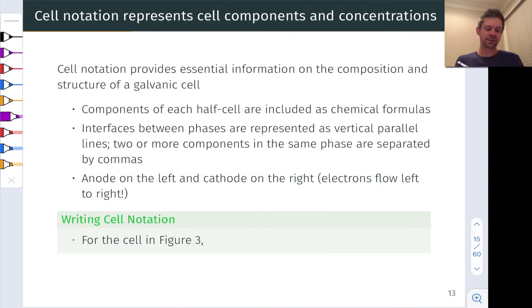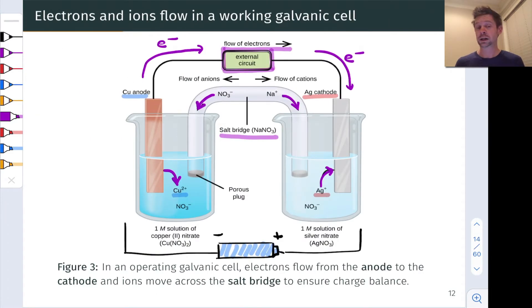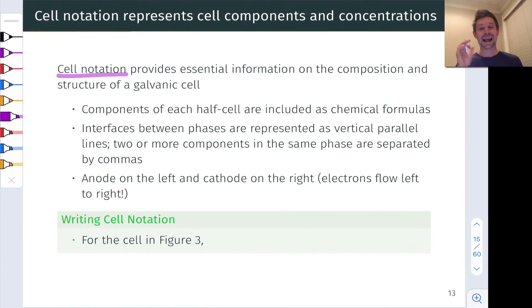Cell notation is a set of standard conventions for writing the components of a galvanic cell and the concentrations of any aqueous species. From this textual description, we can reconstruct a picture and we can get useful thermodynamic information about the cell, including the voltage we would expect it to deliver, something we'll often call the cell potential.